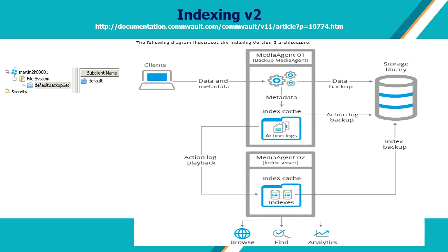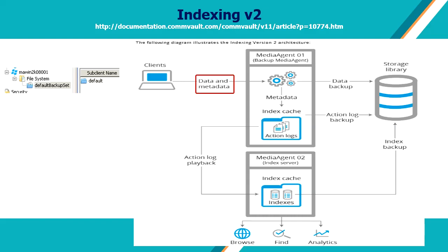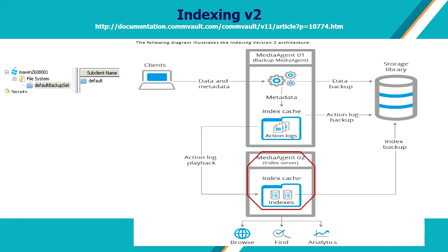As per the indexing version 2 architecture, you have a backup media agent and an index server. During a data backup, actual data and metadata — meaning characteristics about the data being backed up, such as file name, file size, creation date, etc. — travel to the media agent. Action logs containing backup metadata are first created on the backup media agent, and then played back to create one or more indexes on the index server media agent, which is common to the entire backup set. Since the indexing operation doesn't need to be local to the backup media agent, one index server media agent can control indexing operations for multiple backup media agents. During the data backup job, the action logs and the full index are also backed up to the same storage library used for the data backup.